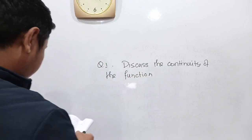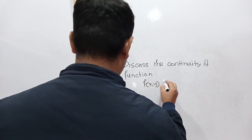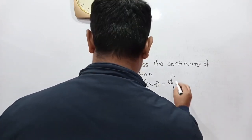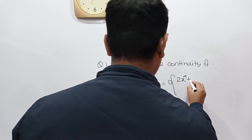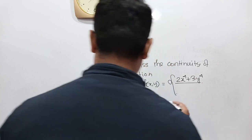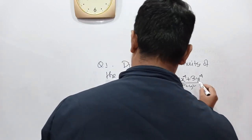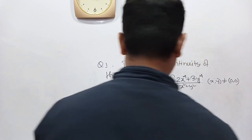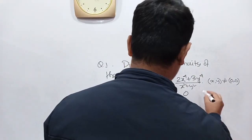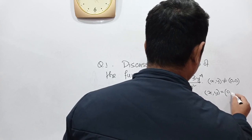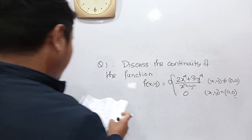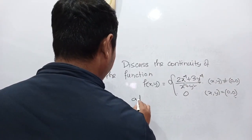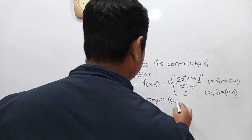The function is f(x,y) = (2x⁴ + 3y⁴) / (x² + y²) when (x,y) ≠ (0,0), and f(0,0) = 0. We have to check the continuity at the origin, that is at the point (0,0).